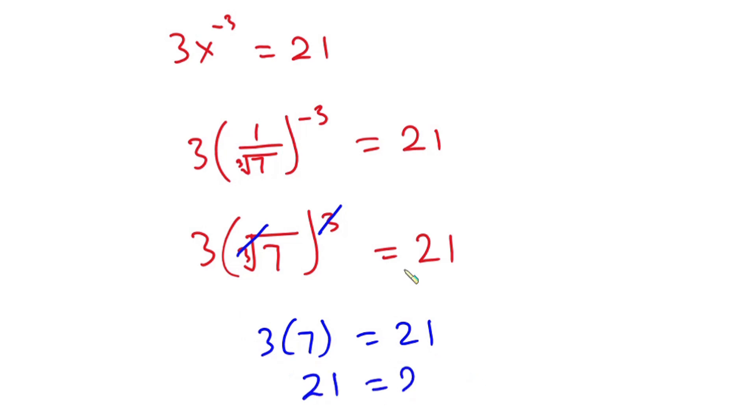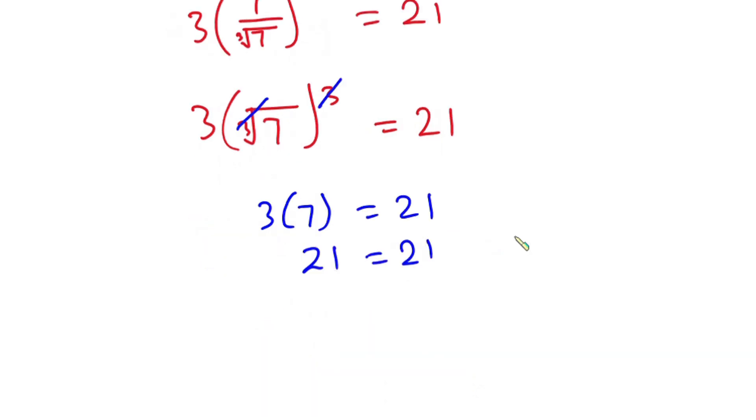You can see that the left hand side is equal to the right hand side. So this means that x equals 1 over the cube root of 7 is a valid solution to the problem.